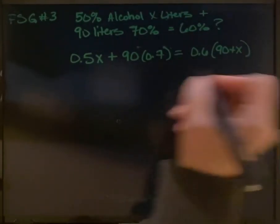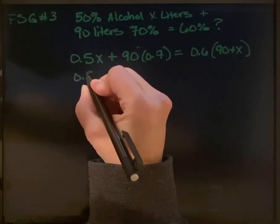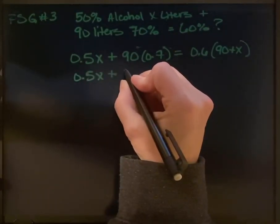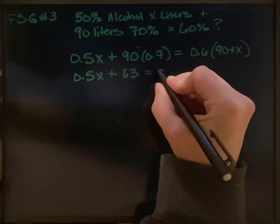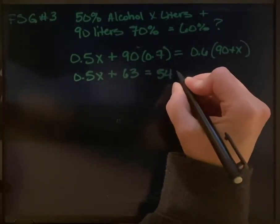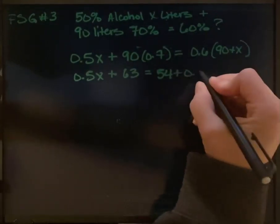Now we can go ahead and distribute. We'll start to solve. So we've got 0.5x plus 63 equals 54 plus 0.6x.